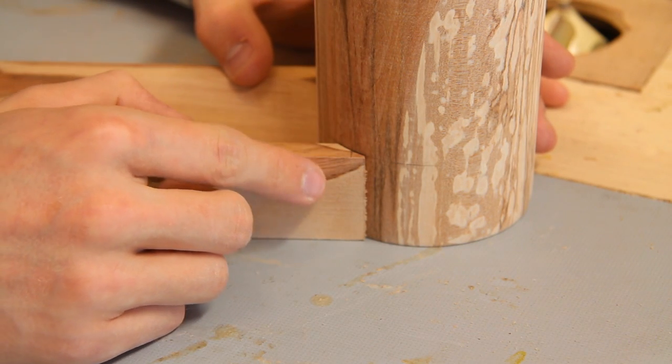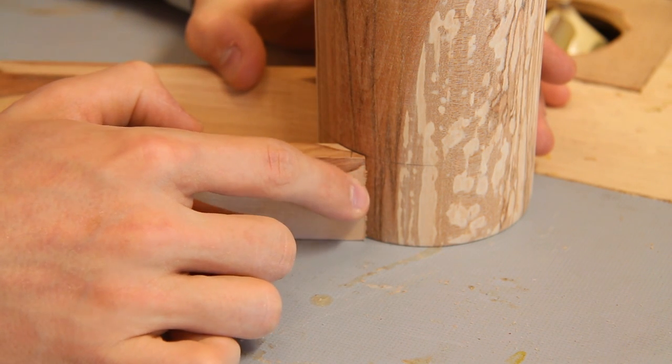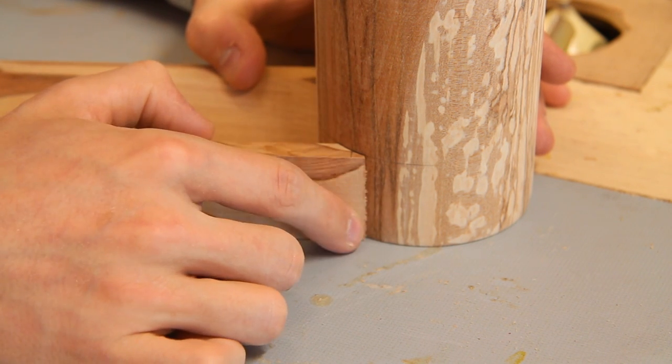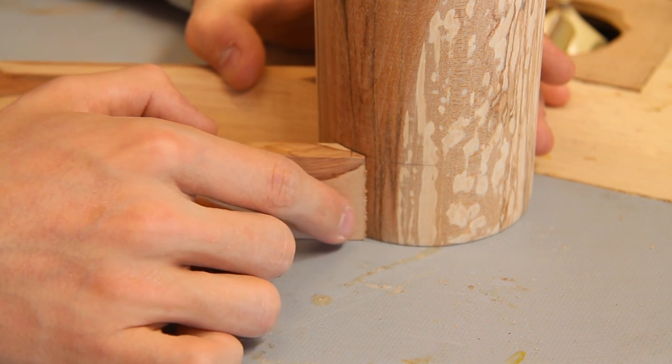Unfortunately one thing I was finding when I was sanding this was it was very difficult to get a nice tight joint here between the two parts. Now even when I did come close the result just looked a little bit odd.